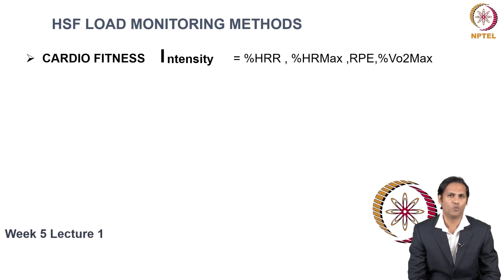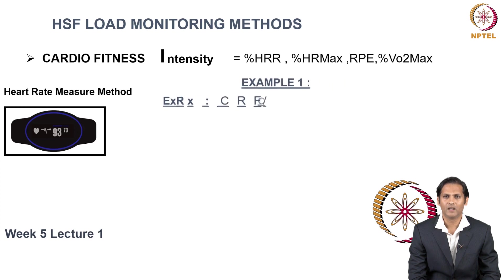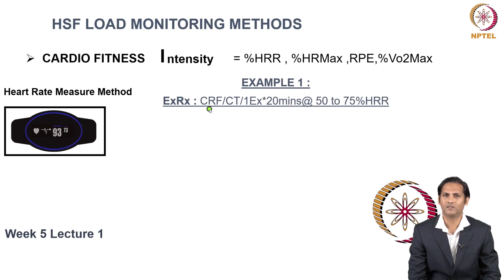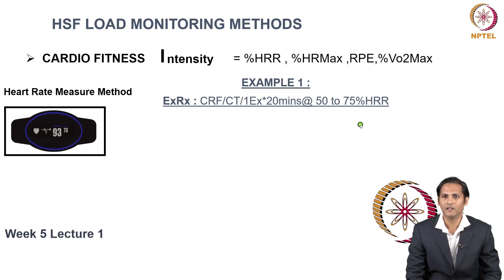Now let's understand what loading methods you can use for a cardio training routine. One method is the heart rate monitoring method, where you perform a cardio workout using a heart rate monitor device. For example, the exercise process involves performing cardio training in a continuous manner — the type of stimulation is continuous training. You perform one exercise for 20 minutes at 50–75% of HRR intensity. That is the prescription given to you, and you monitor this intensity using a heart rate monitor device.